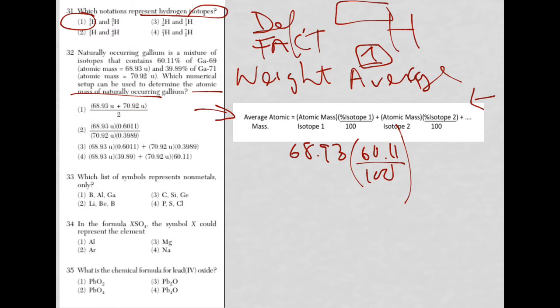Add to that gallium-72 at 70.92 times its percentage (39.89 over 100). You can play the matching game here. The only difference is that 60.11 divided by 100 is 0.6011 times 68.93, and for 70.92 it's 0.3989.